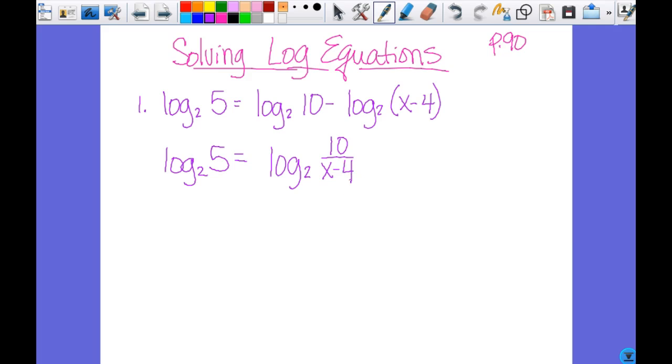And then we have a property that says if log base b of M equals log base b of N, then M and N equal each other, right? So now that they match, I know that I can just move on to 5 equals 10 over x minus 4. And I'm just solving for x, right?